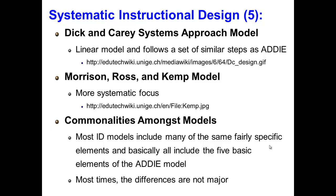Another model is the Morrison, Ross, and Kemp model. It's a model that attempts to shift the focus from a linear development process to one that is more systematic. Part of the idea of this model is that the planning and revision phases should permeate throughout the design process, and this is certainly an important shift. However, if you look at the diagram that outlines this particular model, even without explicit arrows pointing from one phase to the next, the placement of the phases in a clockwise progression still implies a certain linearity in the design that places the actual design of the medium near the end. It fails to highlight the potential impact that a particular medium may have.